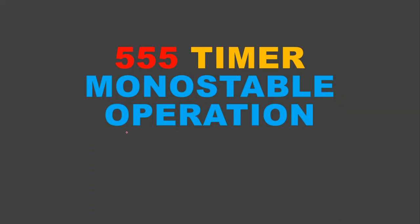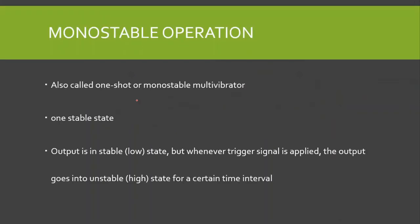Welcome to Technically Explained. In this lecture we are going to study the monostable operation of the 555 timer. The monostable operation is also called the one-shot or monostable multivibrator. As the name suggests, it has one stable state — mono means one, so we have one stable state in monostable operation.